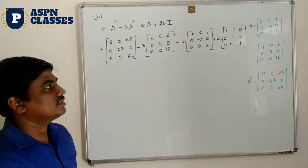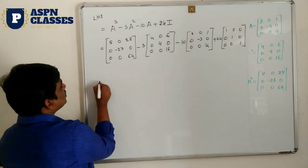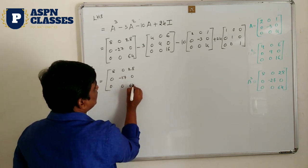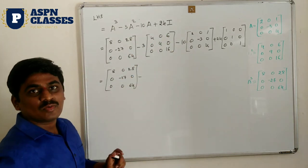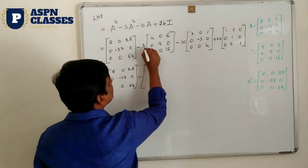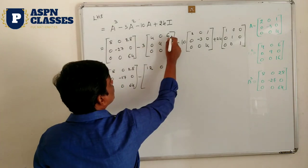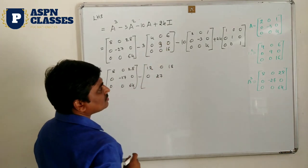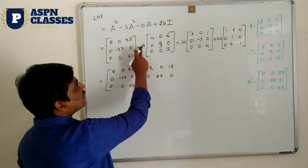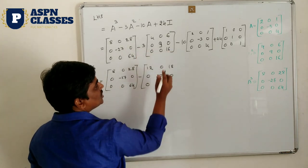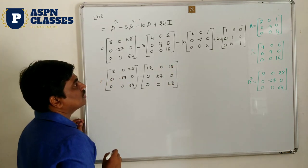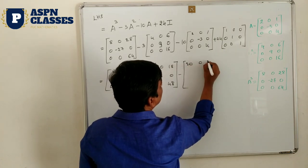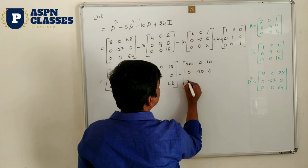Now simplify: the first matrix is written as-is since no scalar multiplies it. For 3×A square, scalar multiplication gives [12, 0, 18; 0, 27, 0; 0, 0, 48]. For 10×A matrix: [20, 0, 10; 0, -30, 0; 0, 0, 40]. For 24×identity: [24, 0, 0; 0, 24, 0; 0, 0, 24].